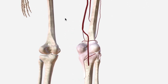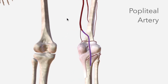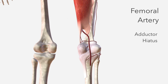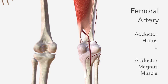In this video, we'll be discussing the popliteal artery. It's the continuation of the femoral artery as it passes through the adductor hiatus, which is this space just here, made up by the tendons of the adductor magnus muscle.